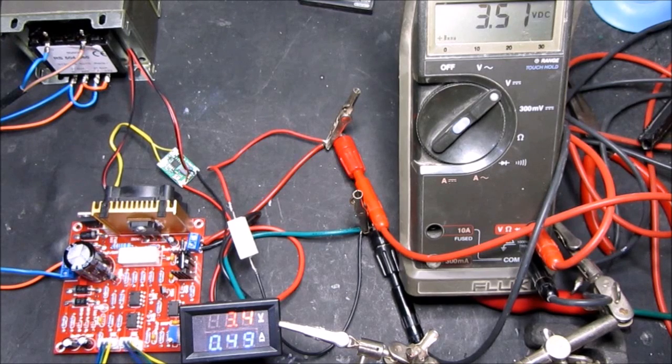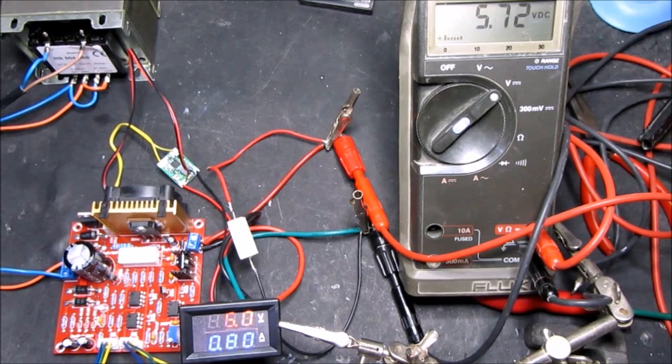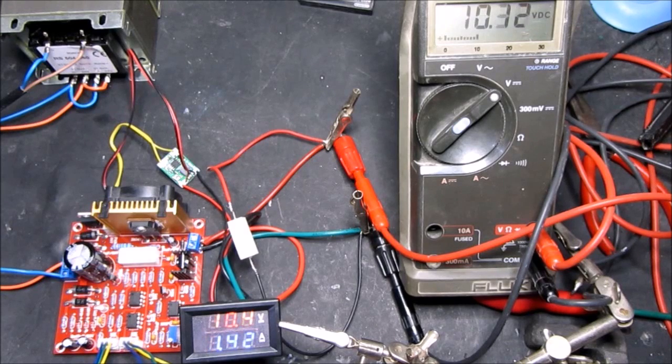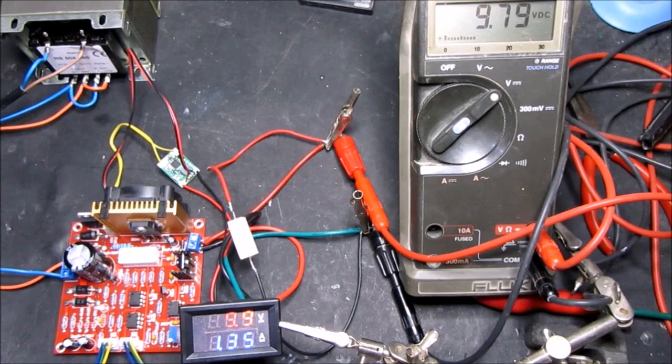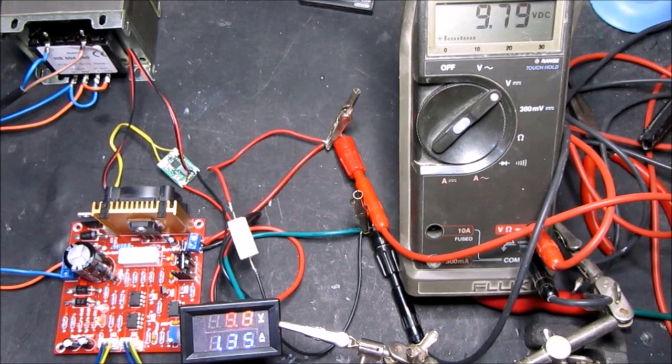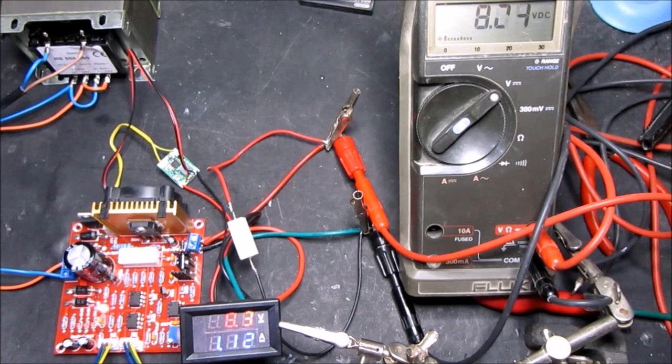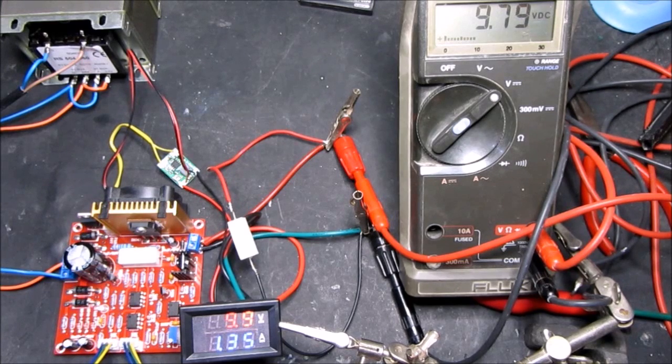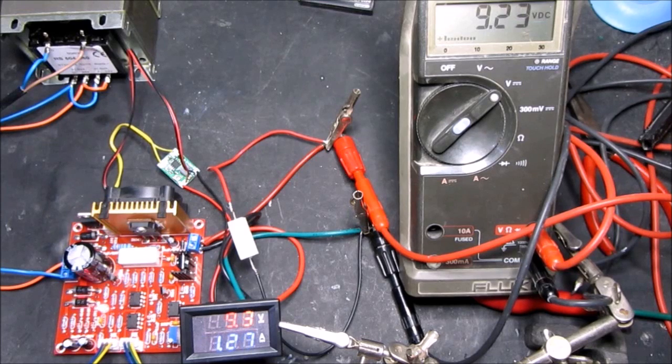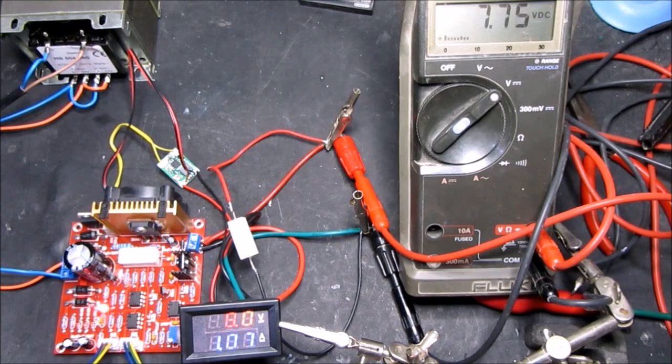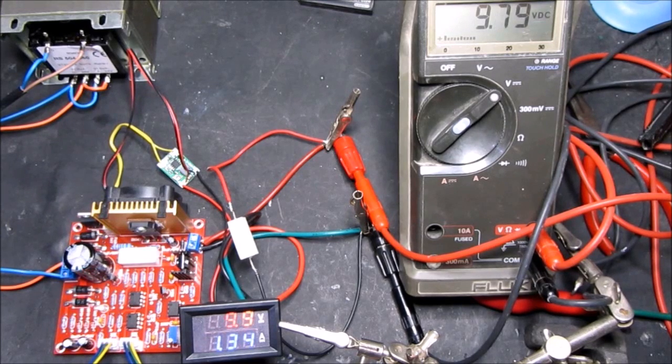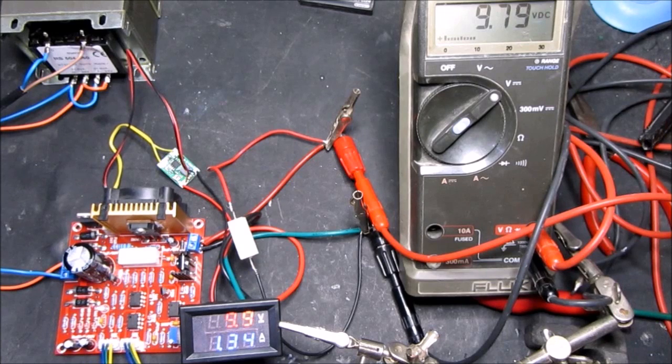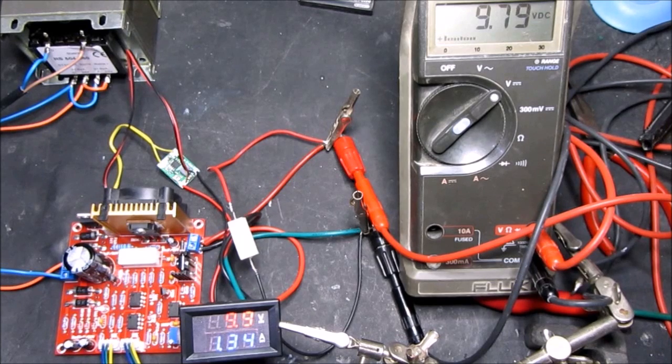So if we go to 10 volts, 10 volts, the current limit should come in at an amp. So it's not terribly accurate, but it's good enough for the needs which we need. So 9.9 volts, 1.35 amps. And as we turn the current limit down, just coming in there at just below 10 volts. Excellent. So now I can build it all into the enclosure and I'll give you a final overview of it when it's in the box.